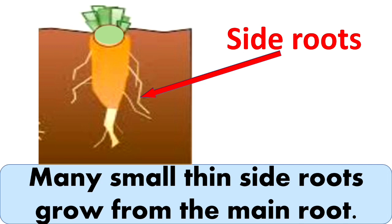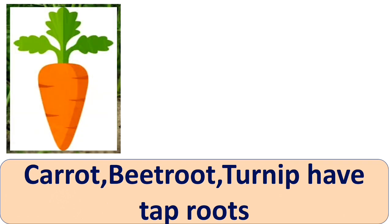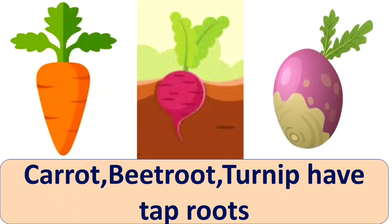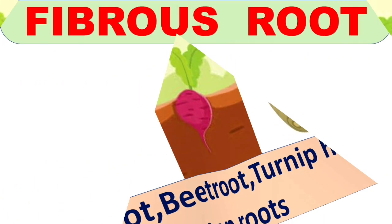These are taproots. Plants like carrot, beetroot, and turnip have taproots — these are the examples of taproot.